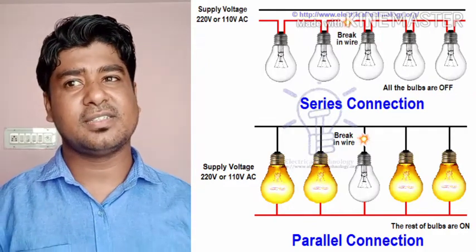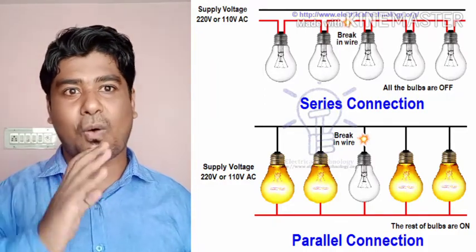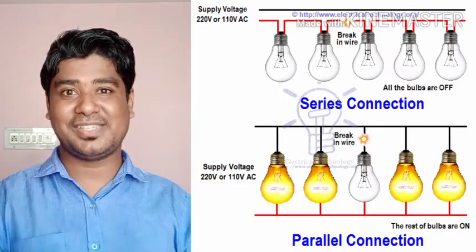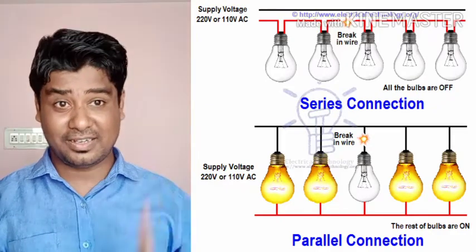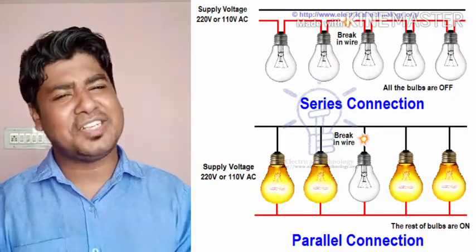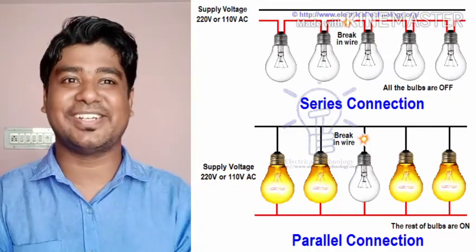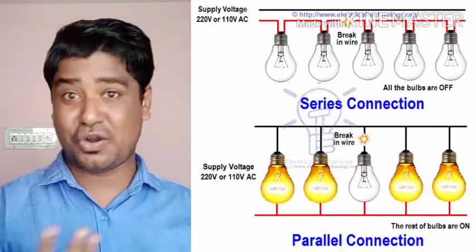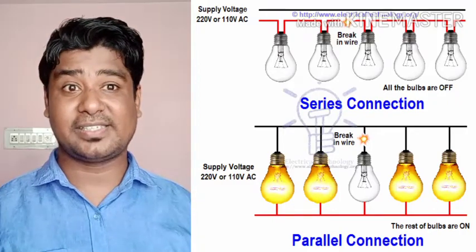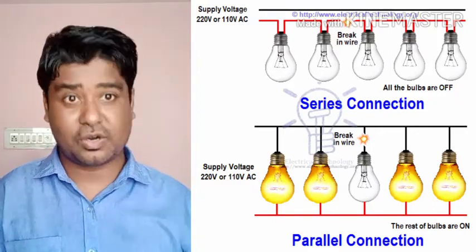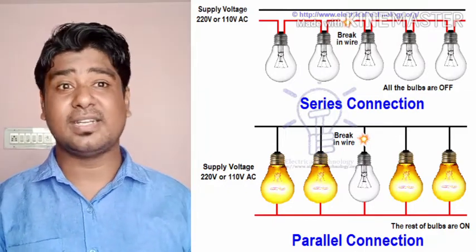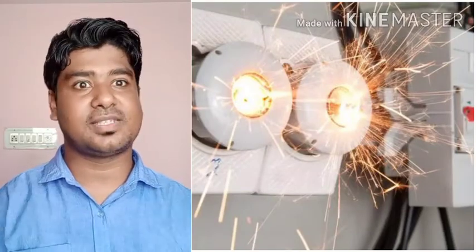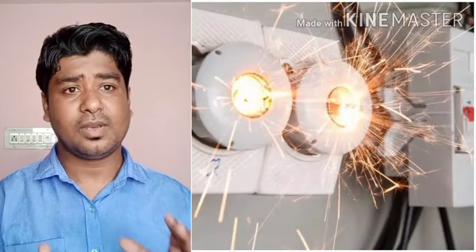A second disadvantage of series is that all devices work on a single switch. Imagine your entire home connected in series — switching on the light would also switch on the TV, refrigerator, fan, and washing machine. Switching off one turns everything off. Moreover, if one device draws a large amount of current, other devices cannot resist it, and there are chances of a short circuit.